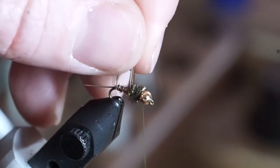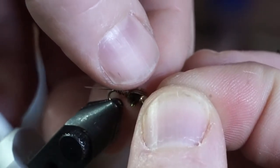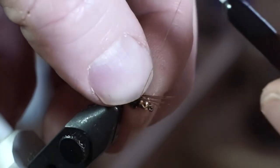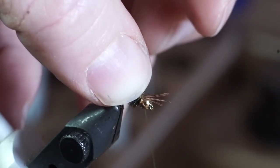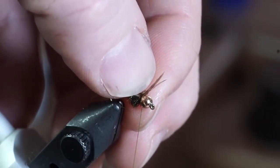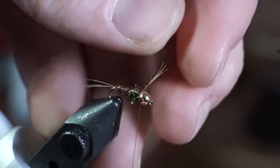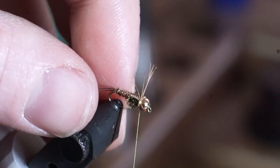Pull the pheasant tail fibers up and forward over the peacock and tie it in just behind the base of the bead. If you tie it in tightly, it will flare the fibers outward like so. But it helps to separate them a bit into two different sections with your fingers.